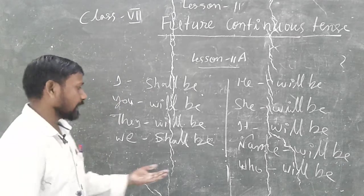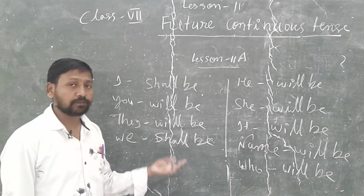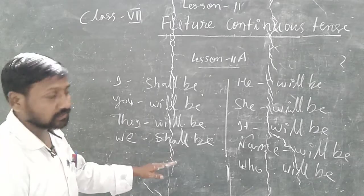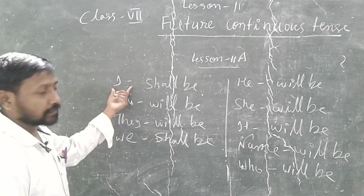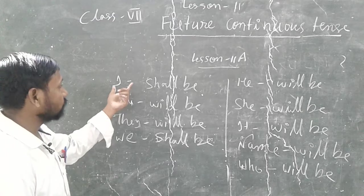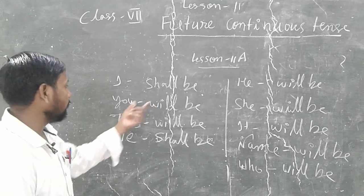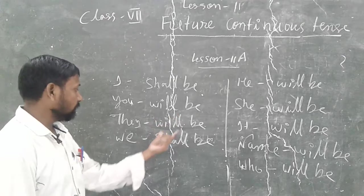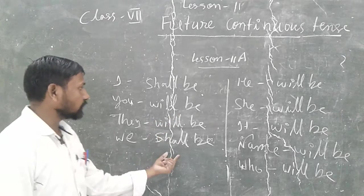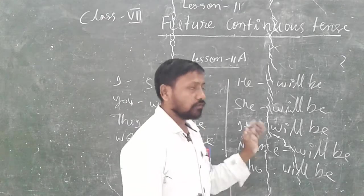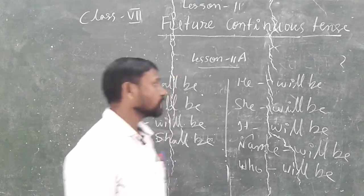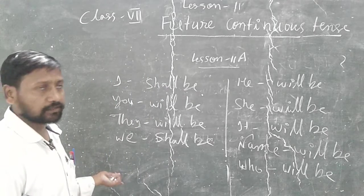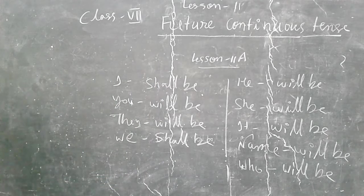These helping verbs will be used according to the subject in future continuous tense. If the subject is 'I' or 'we,' use shall be or will be. If the subject is 'you,' 'they,' 'he,' 'she,' 'it,' a name, or 'who,' use will be. I hope you have taken a screenshot, or you can write it in your notebook.